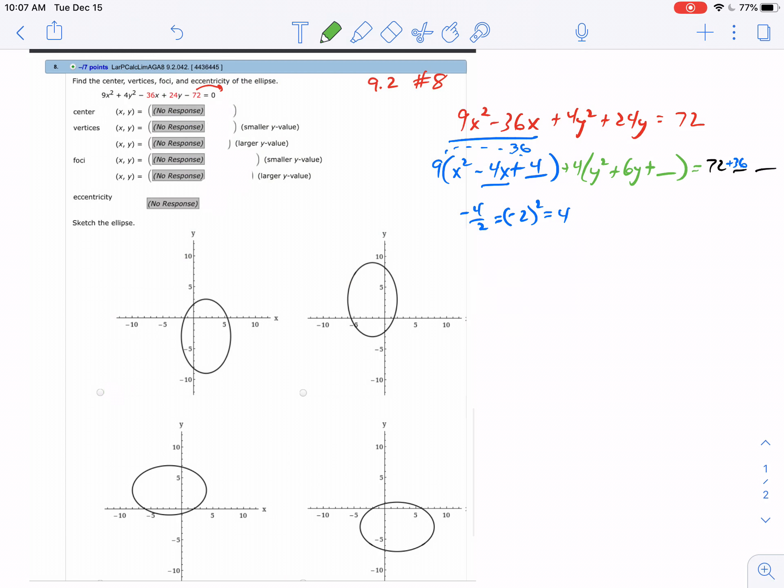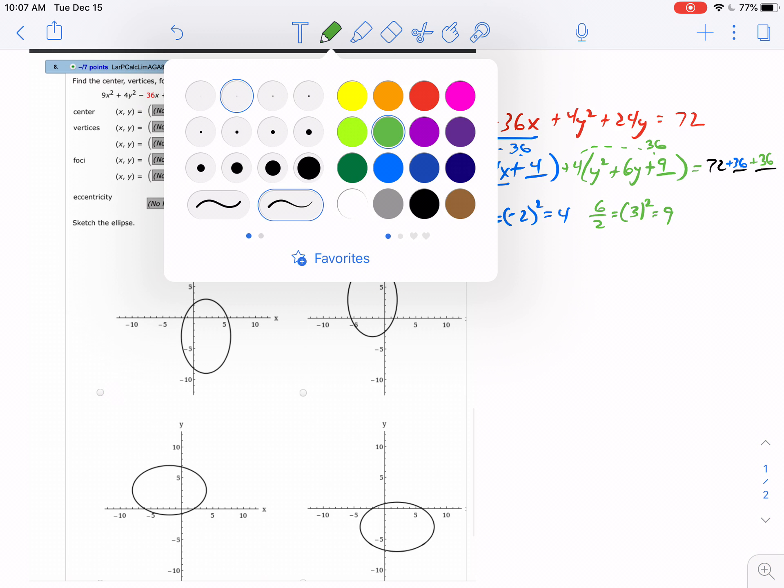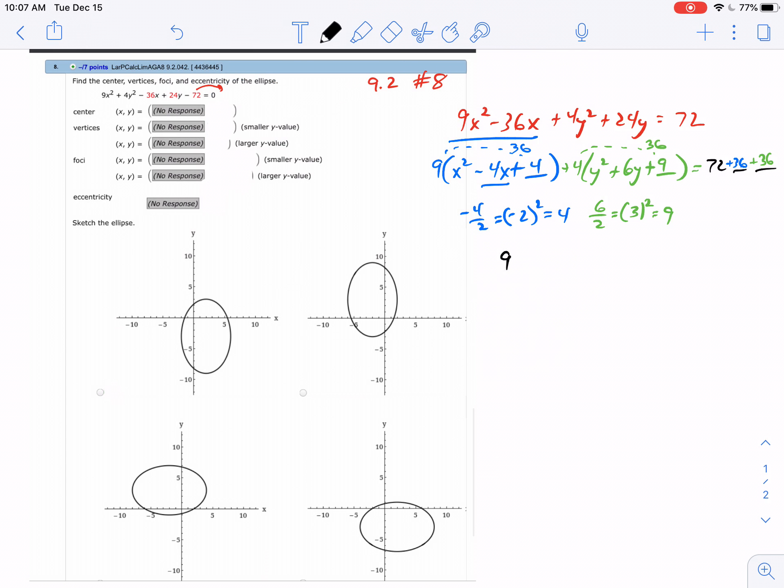Then I take my 6 and divide by 2 to get 3. Squared is 9, so I'll put a 9 here, which becomes 36 when multiplied by the 4 out front, so I'll add 36 over there.